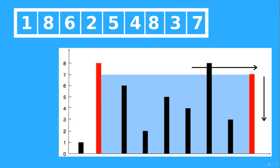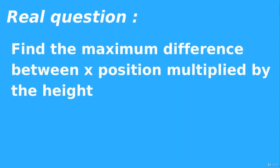We can think of the water-filled area as a rectangle. The height of the rectangle is the shortest building between the two edges, so the extra length of the taller building doesn't help contain more water. This is really a question of finding the maximum area, where area equals height multiplied by width — the minimum building height multiplied by the difference in x positions.